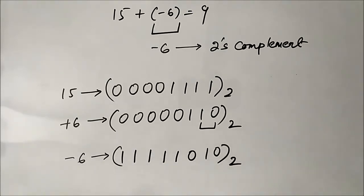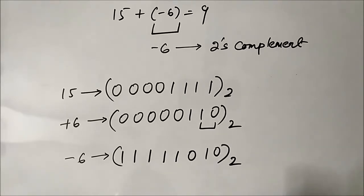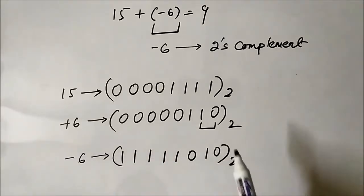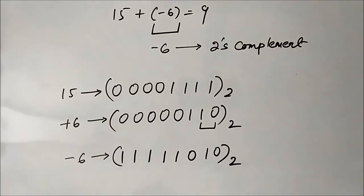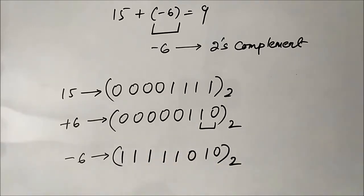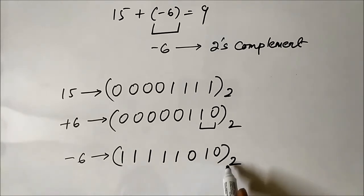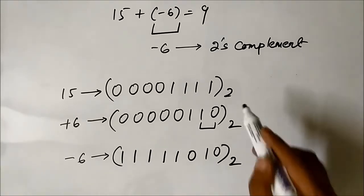I have already posted a video on how to represent signed binary numbers or negative integers using 1s and 2s complement system. Please check out those videos so you understand this in a better way. So, this is minus 6 represented in 2s complement form.